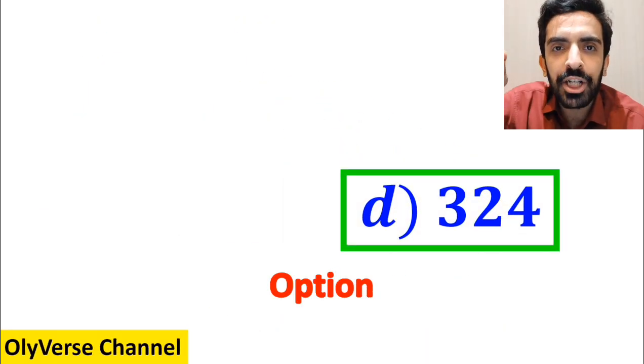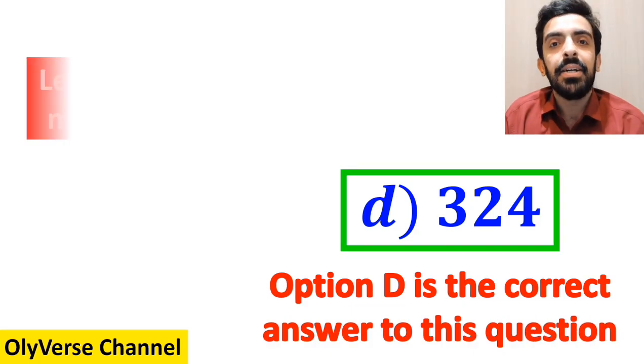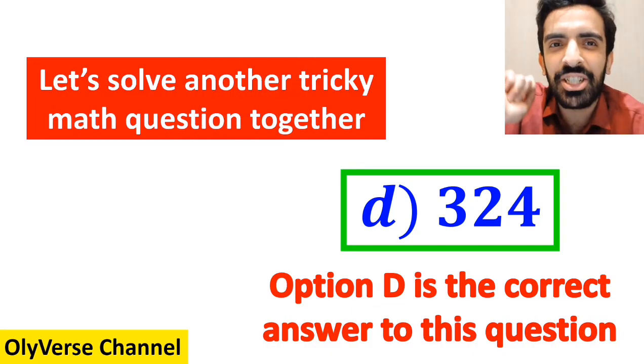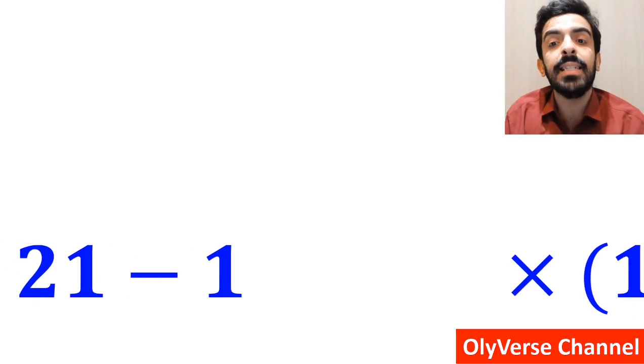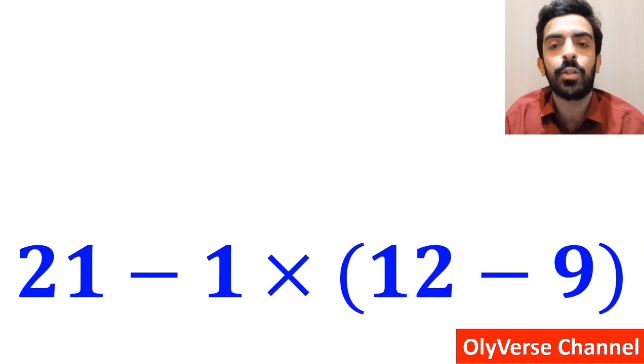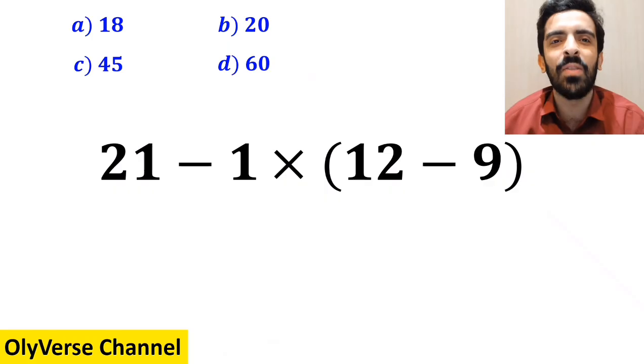Therefore, option D is the correct answer to this question. Alright, now let's solve another tricky math question together. What is the value of the expression 21 minus 1 times open parenthesis 12 minus 9 close parenthesis? Which option do you think is the correct answer to this question? Let's take a close look and solve it together.